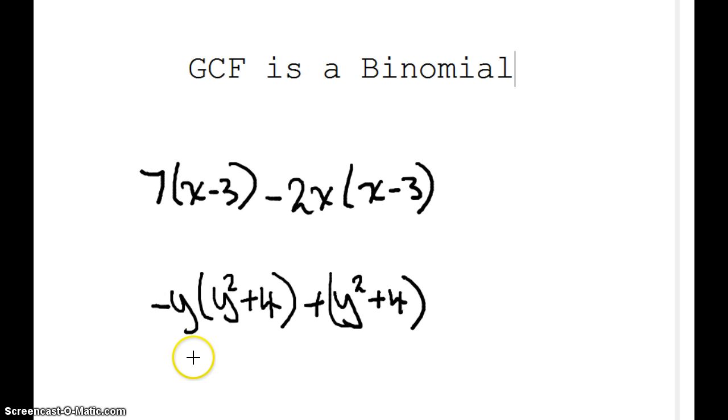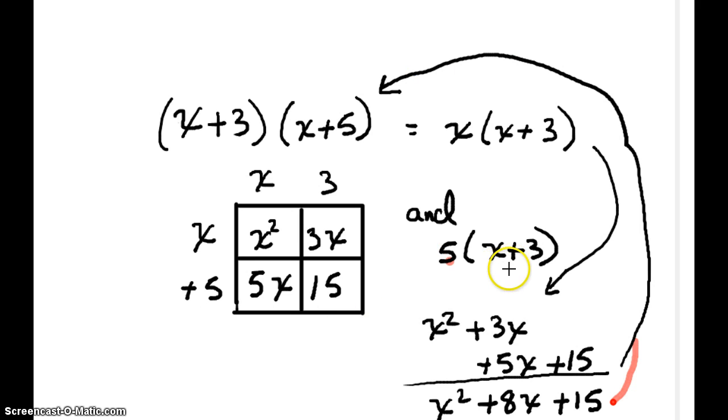All right. What happens if they give me my GCF and it's already as a binomial? It's already as a binomial. Well, let's take a quick look. Well, when we look here, we have a binomial of x+3. And what is the x+3 multiplying? Well, it's multiplying x and 5.